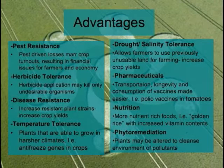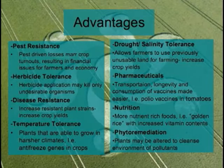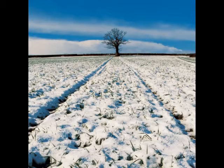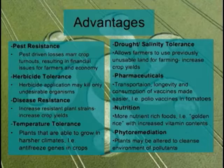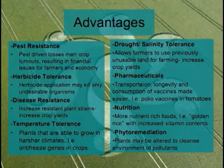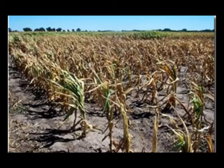Another advantage is disease resistance. An increase in resistant plant strains to many diseases would increase many crop yields. Plants may also be engineered to be temperature tolerant. Plants may be spliced with antifreeze genes to extend growing seasons, increasing the yield. Also, drought and salinity tolerance allows many farmers to farm previously unusable land.